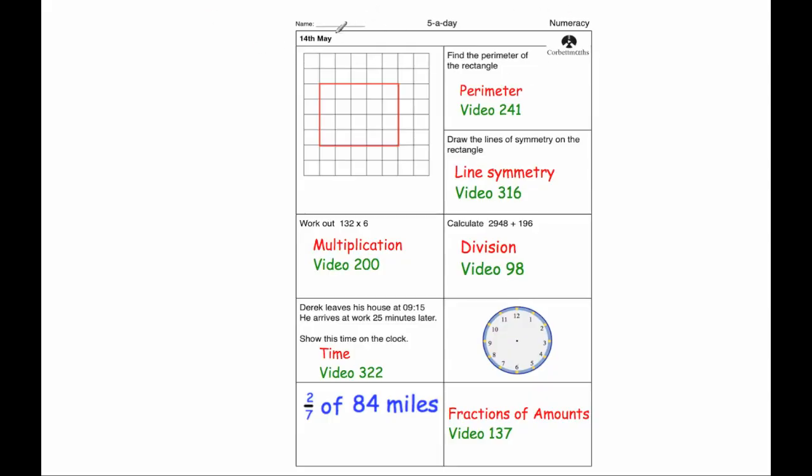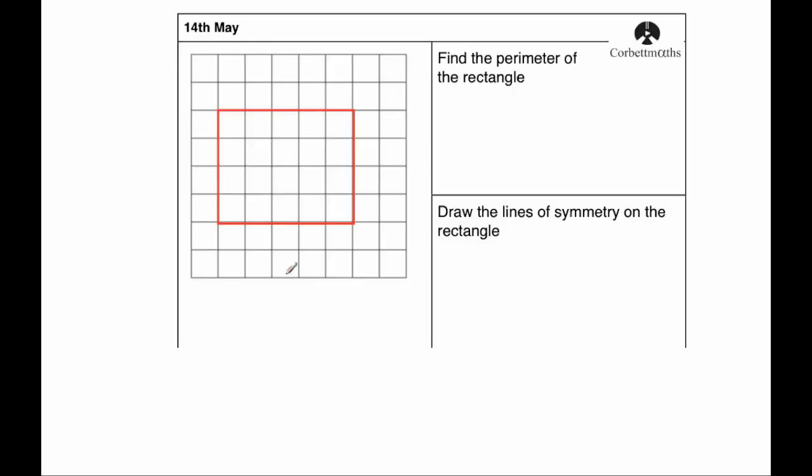Hi, welcome to the numeracy 5 a day answers for the 14th of May. So our first question. Here we've got a centimetre square grid and the question says find the perimeter of the rectangle.